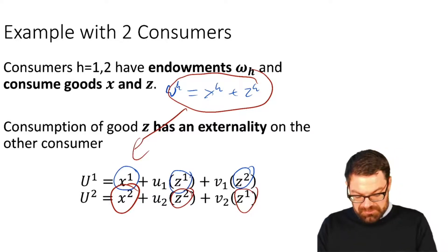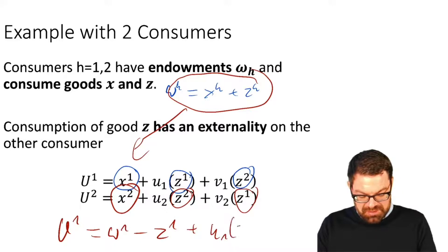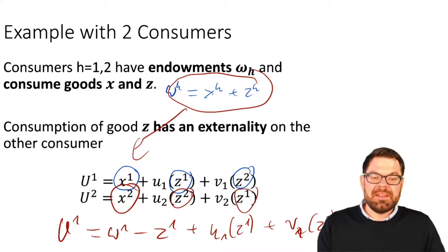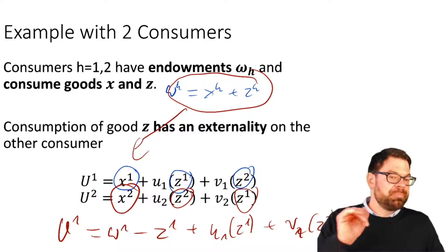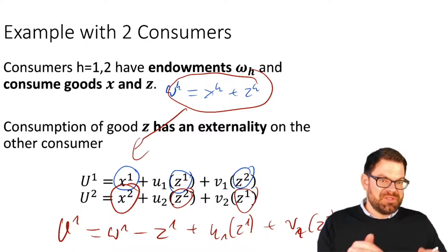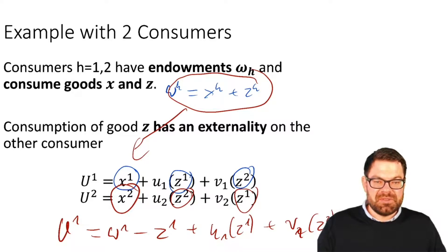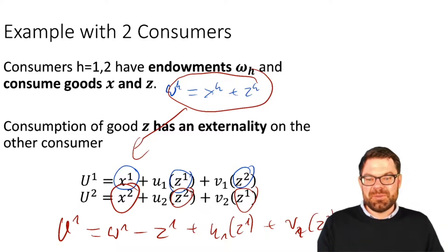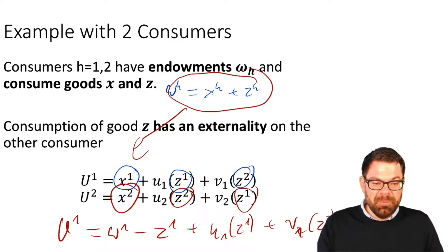To do so, we apply a trick: we take the budget constraint, solve for x, and substitute it into the utility function. For person one, the utility function then becomes: w_1 minus z_1, plus u_1(z_1), plus v_1(z_2). Now we only have one variable that person one controls — how much of good z they consume — since once we know their z consumption we also know their x consumption.